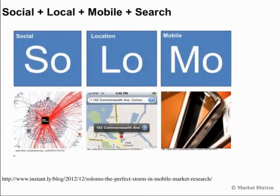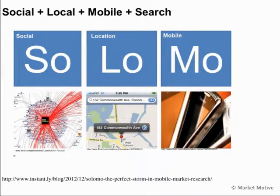Before we dive into all that, I want to talk about the local, social, mobile convergence. At the heart of SEO and at the heart of Search is this convergence of social, local, and mobile. People aren't just searching from their desktop anymore. They're enabling location-based services. They're getting recommendations from their friends through social search.